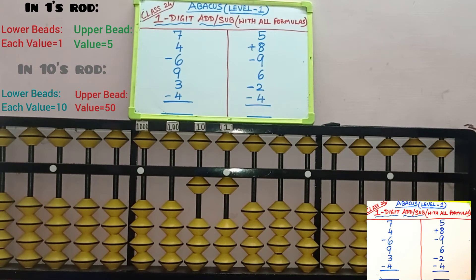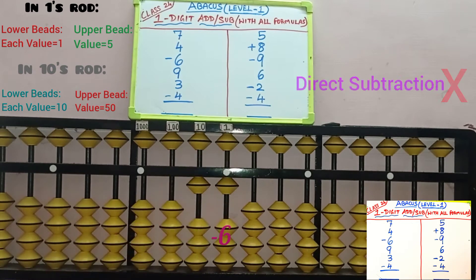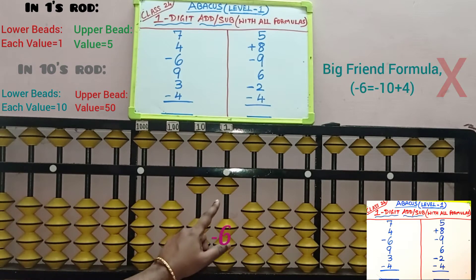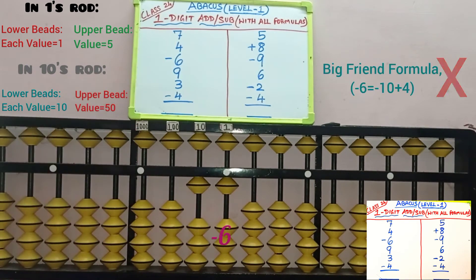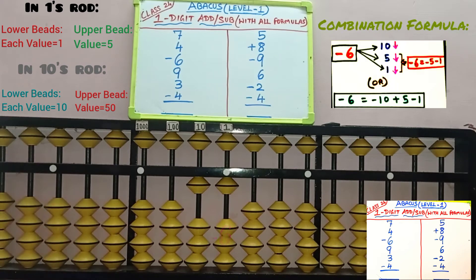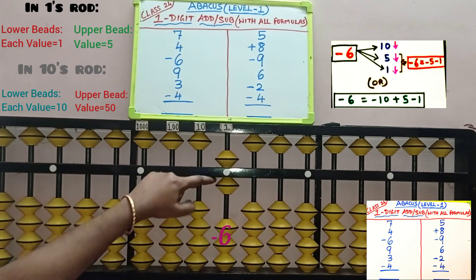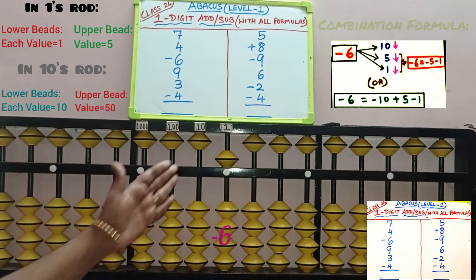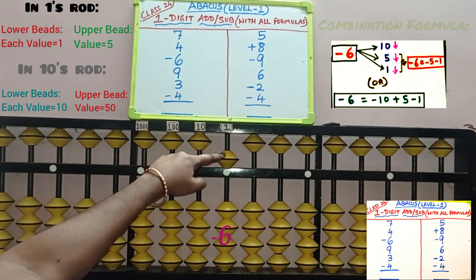Third row, minus 6 — we need to remove 6 beads from the 1 slot. Only 1 bead is available to remove. Big friend is also not possible because 6's big friend is 4; in plus 10 minus 6, we need to add 4, but only 3 beads are available. So apply combination formula. Combination minus means move beads in the down direction — 10 downward, 5 downward, and 5 plus 1 equals 6, so move that 1 bead down. 6 is removed with minus 10 plus 5 minus 1.